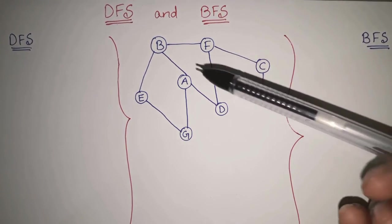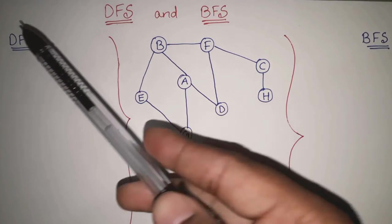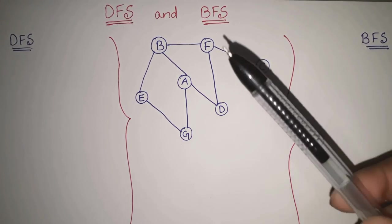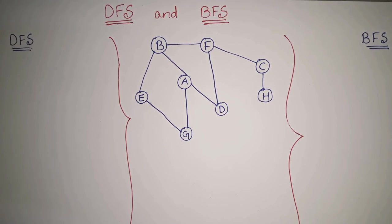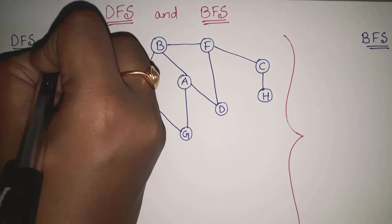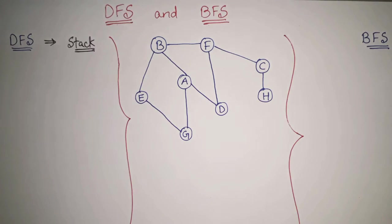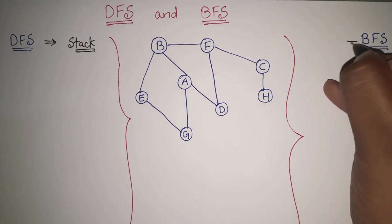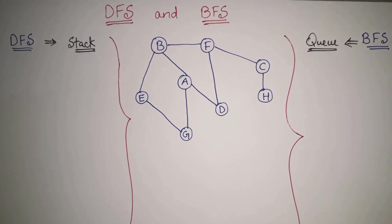For example, this is a graph given, and for this graph we will be writing the DFS traversal as well as the BFS traversal. For this given graph, let's see how to find out the DFS traversal. DFS stands for depth first search. You have to remember that for depth first search, we will be using the stack data structure, and for BFS we will be using the queue data structure. This is the basic thing you should remember.